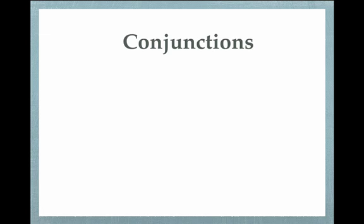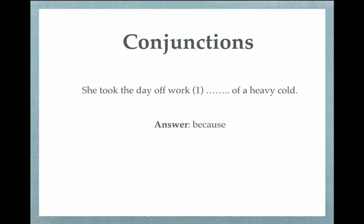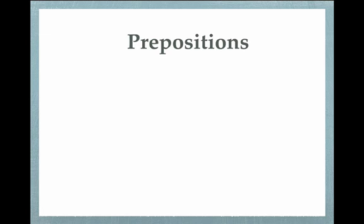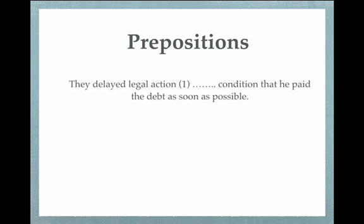Conjunctions like although, yet, still, or because will sometimes be gapped. Which conjunction is missing here? Prepositions, especially those in set expressions like 'on the contrary' or 'in the meantime,' will sometimes be gapped. Which preposition is missing here?